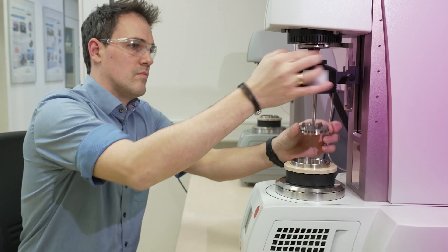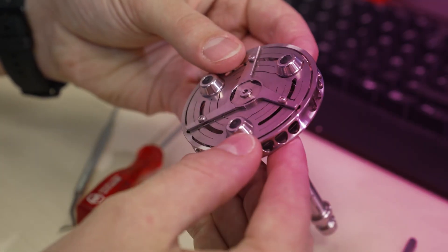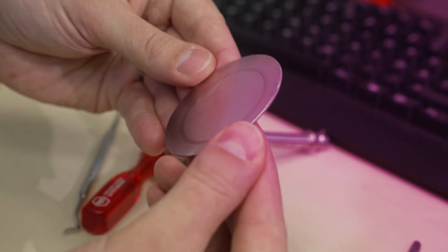We use for example pin-on-disk tests. In this method the rotating tape samples are pressed against the steel disc to measure friction and wear.